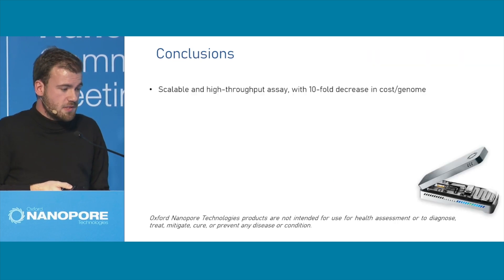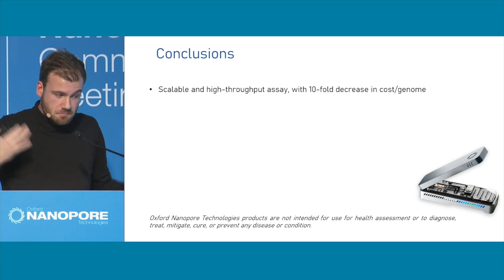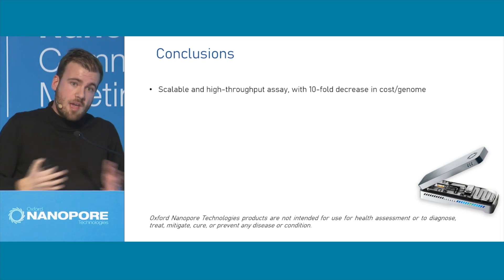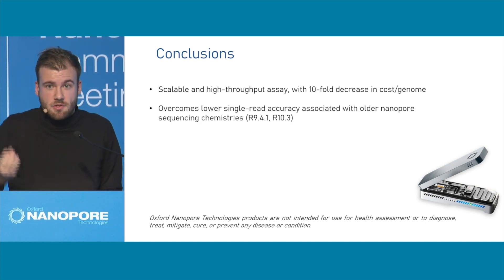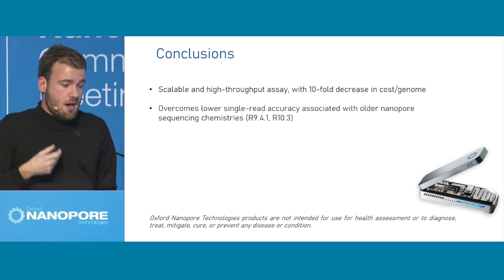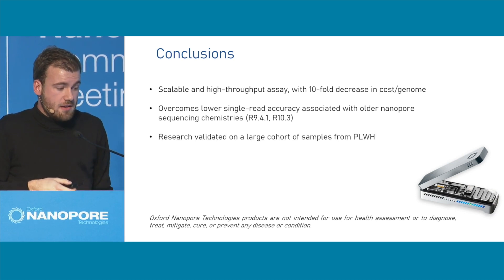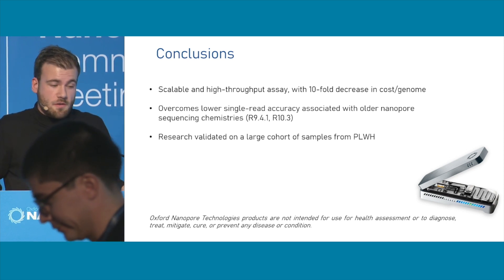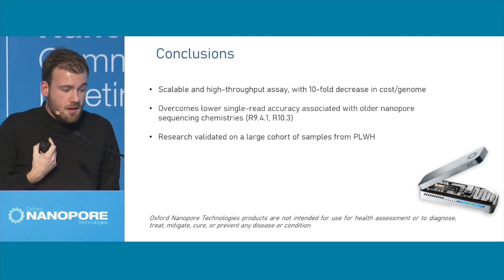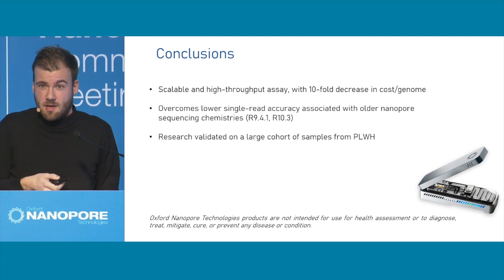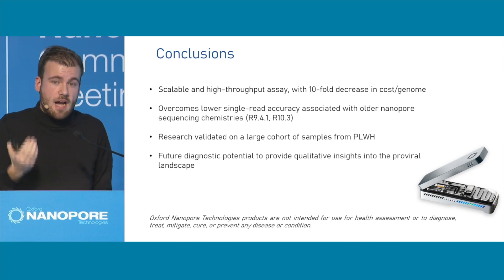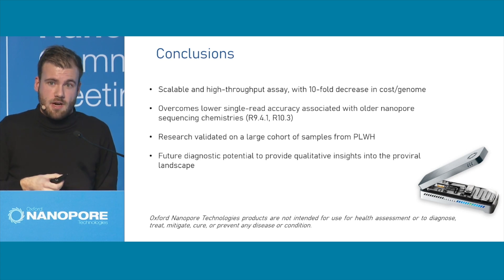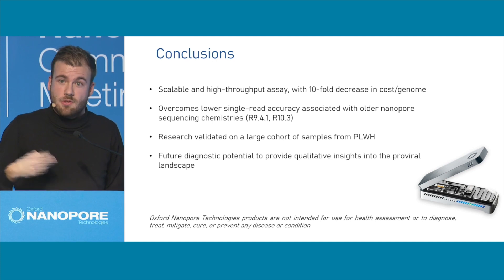To summarize and give some final conclusions: we have a scalable and high-throughput assay with a tenfold decrease in cost per genome. This allows us to process way more samples with the same budget as regular methods. It also overcomes the lower single-read accuracy associated with older nanopore technologies such as R9 and R10. The research validates the method on a large cohort with a lot of different parameters, confirming it still works across different patient samples. It really has future diagnostic potential to provide scalable, high-throughput data and qualitative insights into the HIV-1 proviral reservoir, which can be used to test new curative interventions.